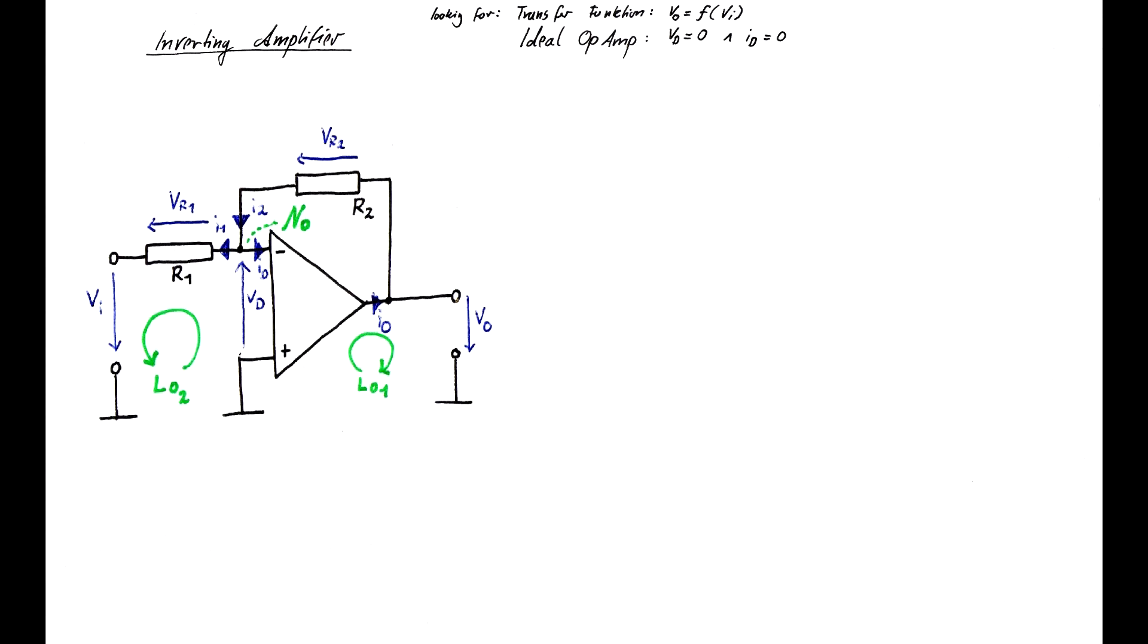Now we can start calculating. We first take a look at the two loops and try to formulate two so-called mesh equations. The mesh equation for loop 1 is VO plus VD minus VR2 equals zero. After transposing, you get Vout equals VR2 minus VD. And together with the condition that VD equals zero, it follows that the output voltage VO is equal to the voltage drop VR over resistor R2.